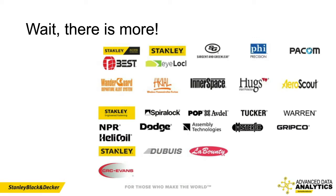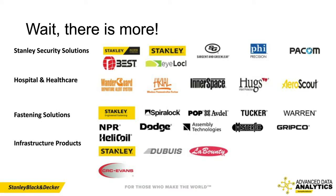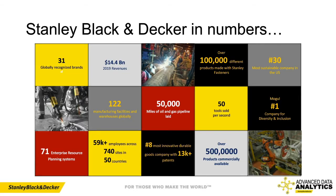Any demand forecasting work we do has to go across all these different elements of the business. One of the core challenges is that with all the complexity of these brands, we have about 100,000 products, and based on how we forecast them, we have almost 2.1 million demand forecasting units to forecast across the globe.